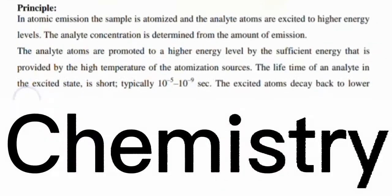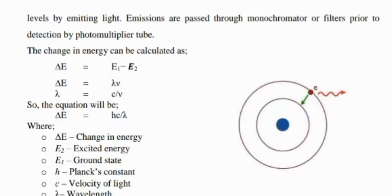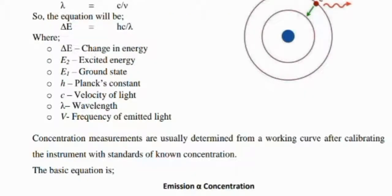The most important thing is the principle of Atomic Emission Spectroscopy. An atomized analyte's atoms are excited to higher energy levels, and the light concentration is determined from the amount of emission. Here you can see the picture and the equation: ΔE = E1 - E2, and the final equation is ΔE = hc/λ. The emission is directly proportional to the concentration.